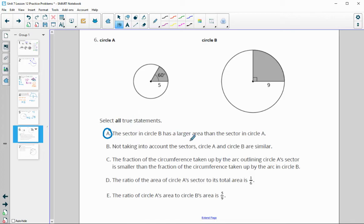B, not taking into account the sectors, circle A and circle B are similar. Yes, all circles are similar. C, the fraction of the circumference taken up by the arc outlining circle A's sector is smaller than the fraction of the circumference here. This is 60 out of 360, that's 1 sixth, and this is 1 fourth. Plus you can see this is a smaller portion. This one doesn't go as far as this one did. So this is true.